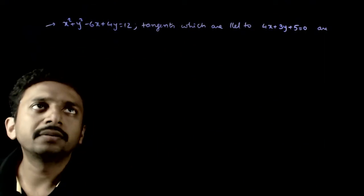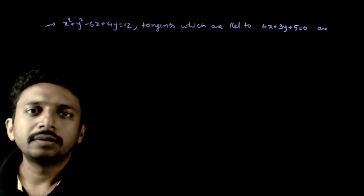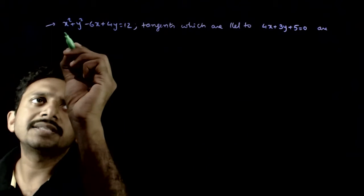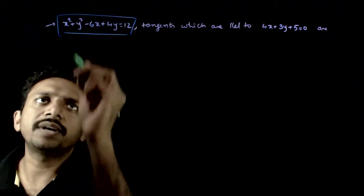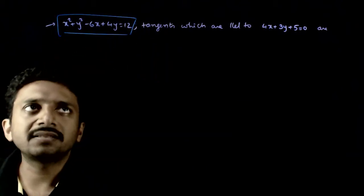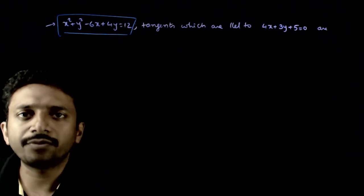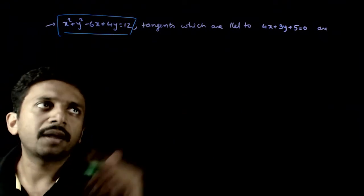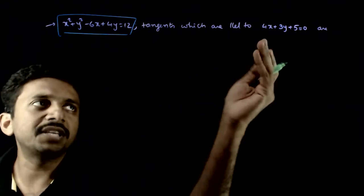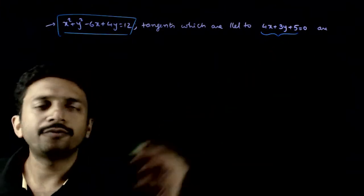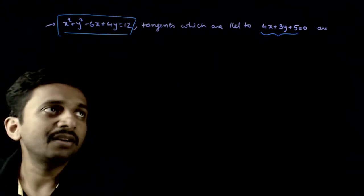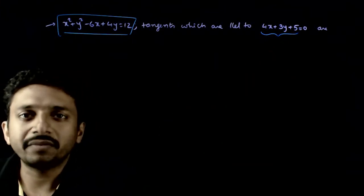Welcome students. This question gives a circle equation x squared plus y squared minus 6x plus 4y is equal to 12. You are asked to find the tangents which are parallel to 4x plus 3y plus 5 is equal to 0.